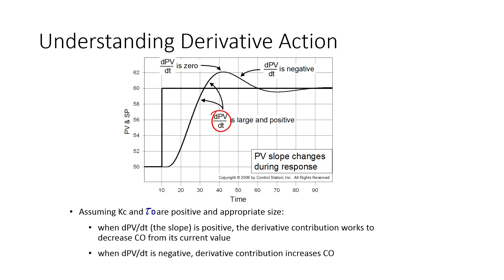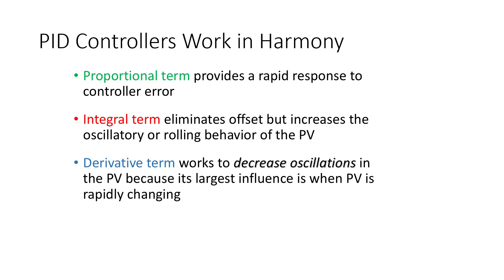Relating back to the PV, d(PV)/dt is zero at steady state, becomes a very large positive value as the PV rises, then zero again at the peak, and negative as it falls. You just visualize the slope of that signal — that gets included in your PID equation. To summarize: the proportional term provides rapid response to control error; the integral term eliminates offset but increases oscillatory behavior; and the derivative term works to decrease oscillation, slowing response when approaching a set point too fast.